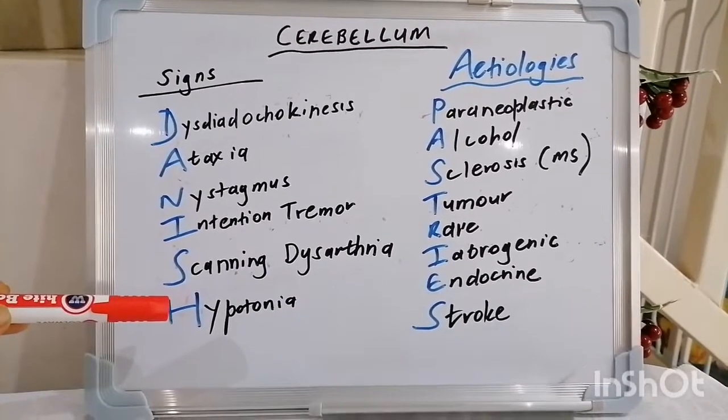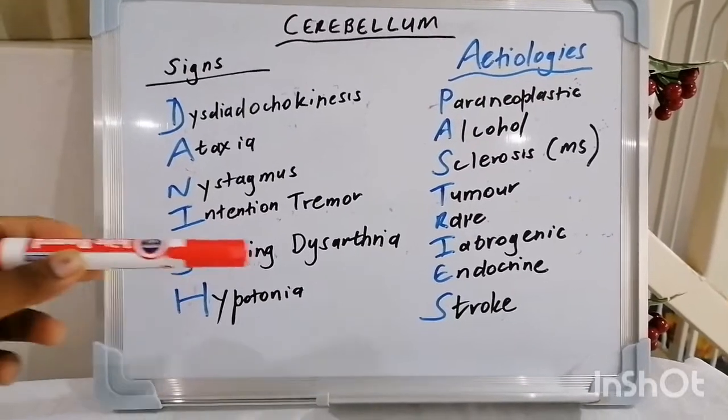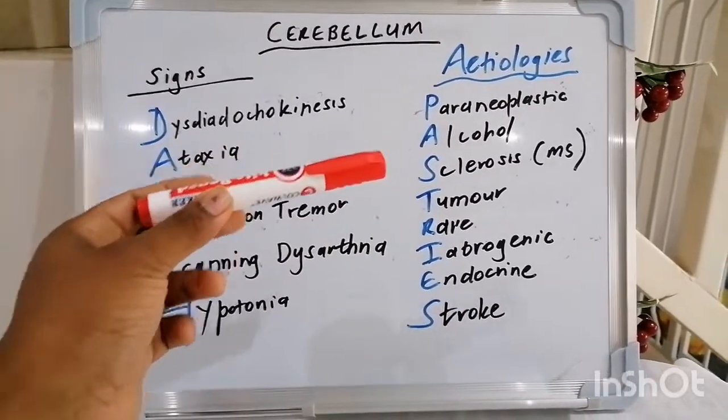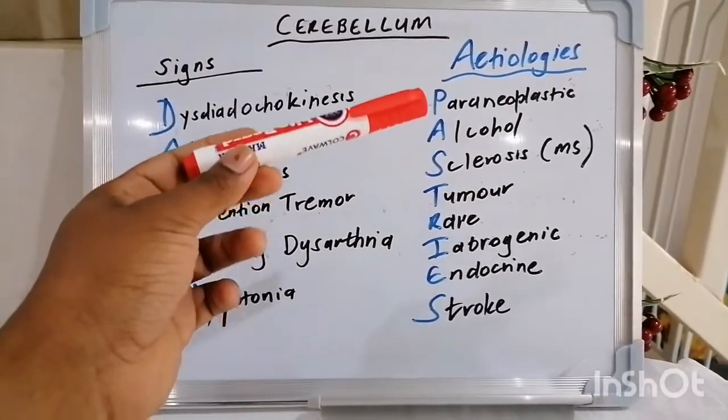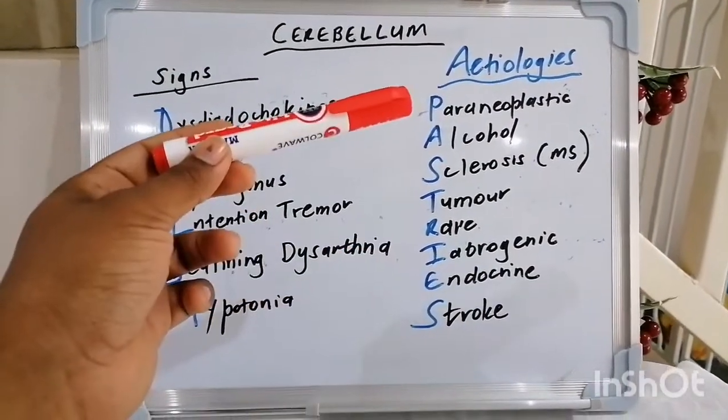S stands for scanning dysarthria or staccato speech. The second S can stand for hypotonia or hyporeflexia. We're now looking at different etiologies of cerebellar disease, and the mnemonic for that is PASTRIES.